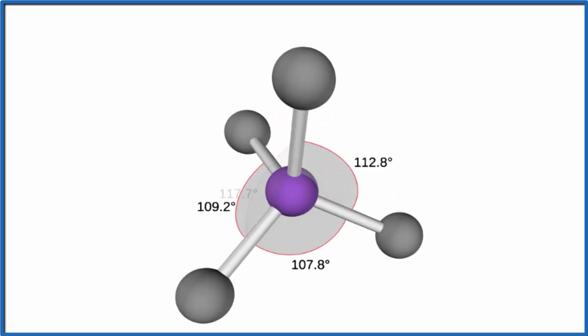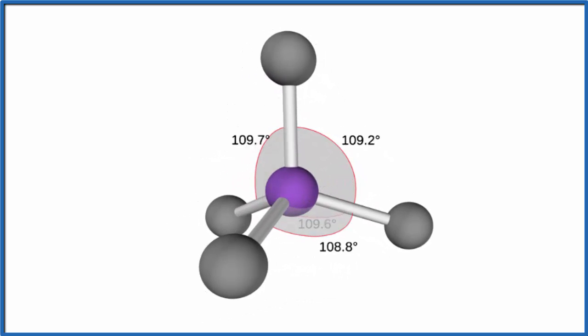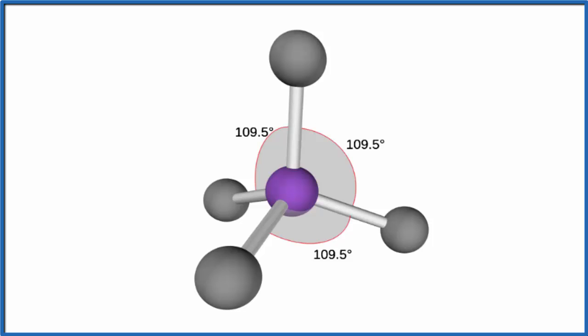And that really gives us that three-dimensional molecular geometry here. So we can see the molecular geometry is tetrahedral. The electron geometry is also tetrahedral, and that's because there aren't any lone pairs.